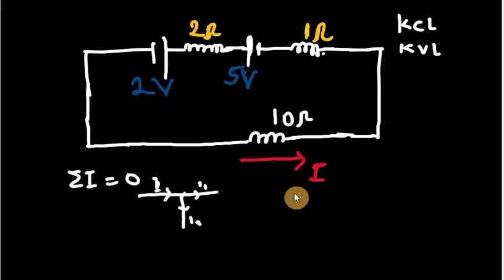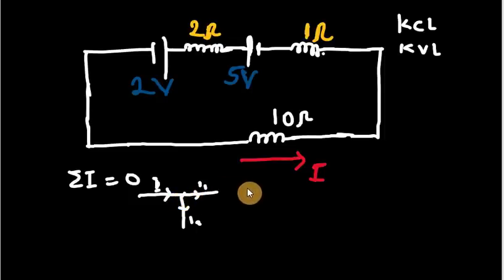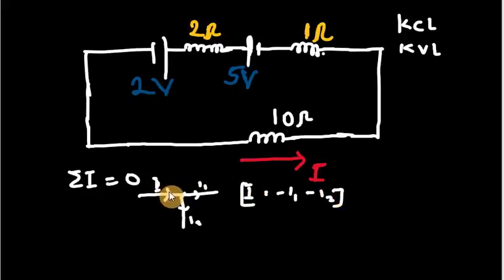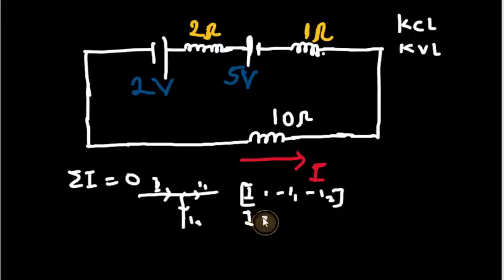The sign convention we take note of here: the current that enters the junction is positive and the current that leaves the junction is negative. So we have I minus I1 minus I2, meaning the sum of the currents entering equals the sum that leaves. The statement of Kirchhoff's current law is simply: the current that enters equals the current that leaves.